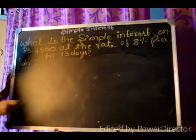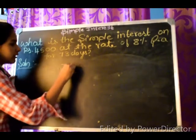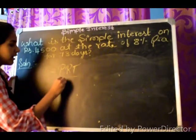So now let's see how to solve this problem. Interest is equal to principal into rate into time divided by 100.